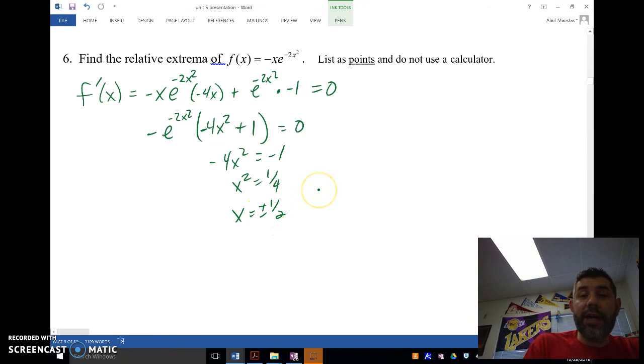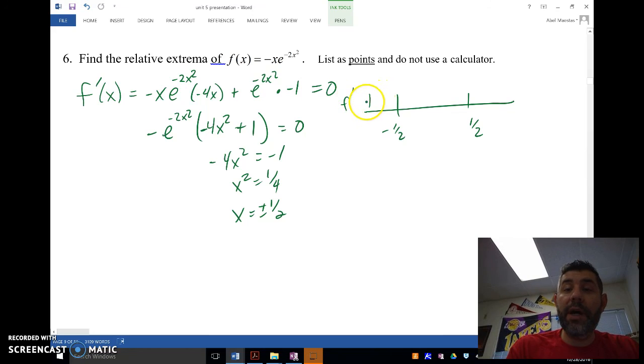So then I'm going to check that on a table here. Negative one half, one half. And when I plug that into my f prime function, I'm going to get positive, negative, then positive. So it's going to increase, decrease, increase.